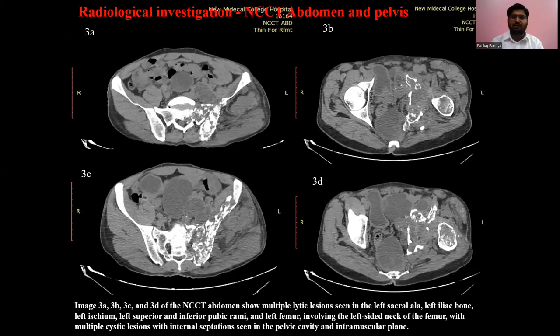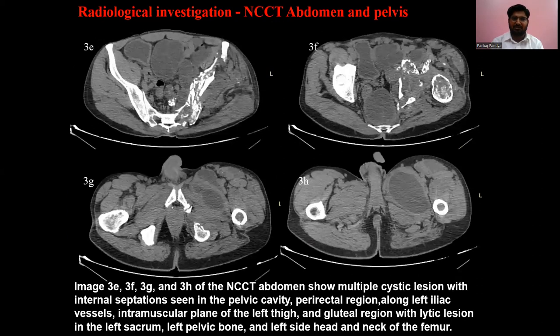On non-contrast NCCT of abdomen and pelvis, image number 3a, b, c, and d shows multiple lytic lesions in the left sacral area, left iliac bone, left ischium, left superior and inferior pubic rami, and left femur involving the left side neck of femur, with multiple cystic lesions with internal septation seen in the pelvic cavity and intramuscular plane.